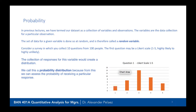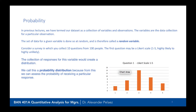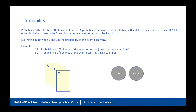Take the example of a survey collecting 10 questions from 100 people. The first question may be a Likert scale from 1 to 5, ranging from highly likely to highly unlikely. The collection of responses for this variable would create a distribution — we call this a probability distribution because we can assess the probability of receiving a particular response. In the chart below, we can see approximately three responses for answer one, seven for answer two, and fourteen for answer three.